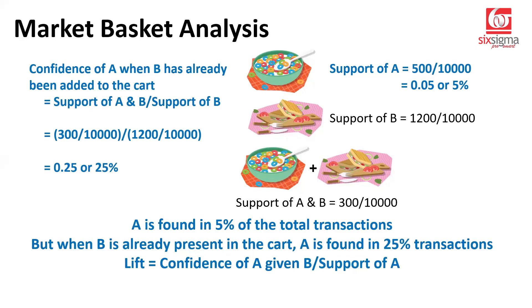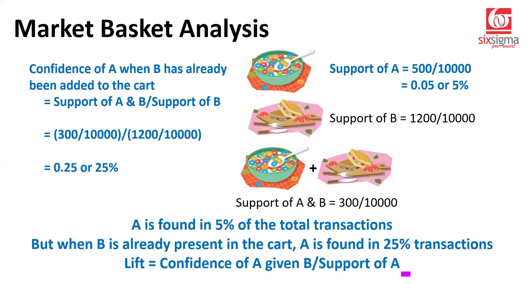This leads us to derive a new metric called LIFT, which is nothing but a ratio of the conditional probability to the prior probability. If we put the numbers in, it is going to be 0.25 divided by 0.05, which is 5.